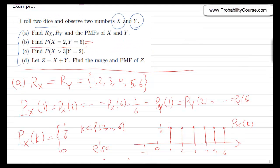For part b, these two random variables are independent, so we can write P(x=2 and y=6) = P(x=2)·P(y=6). Note that independence is the justification for this factorization. P(x=2) = 1/6 and P(y=6) = 1/6, so this equals 1/36.